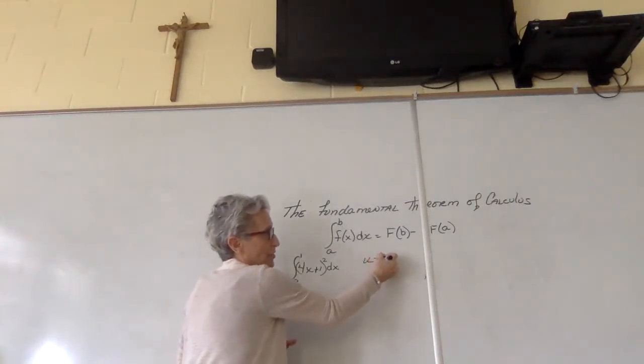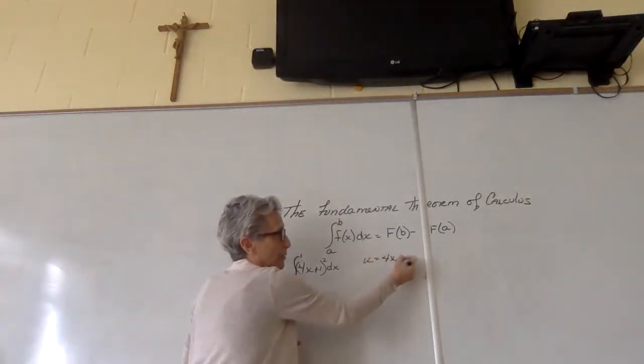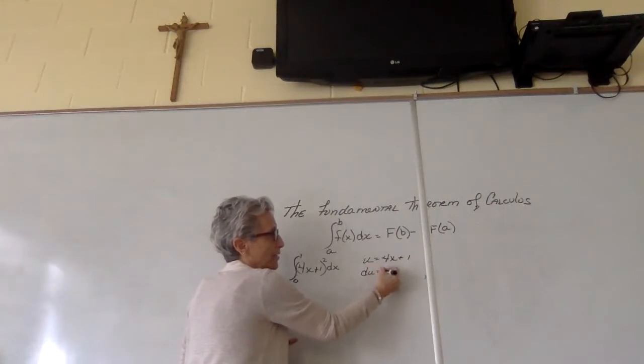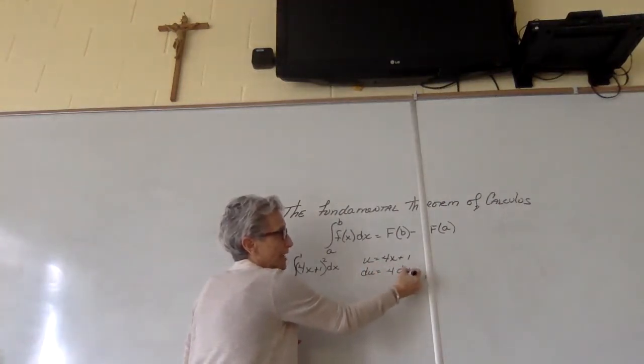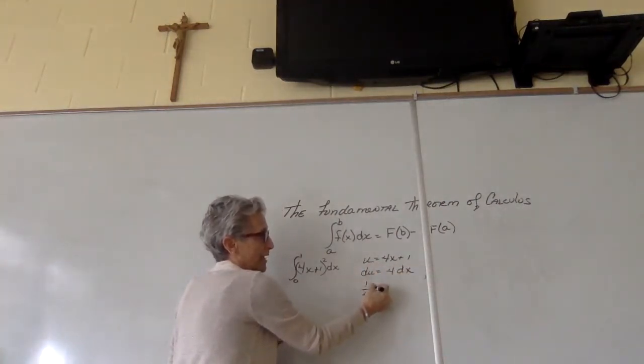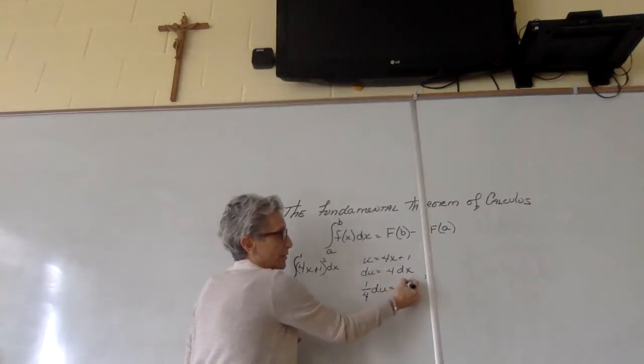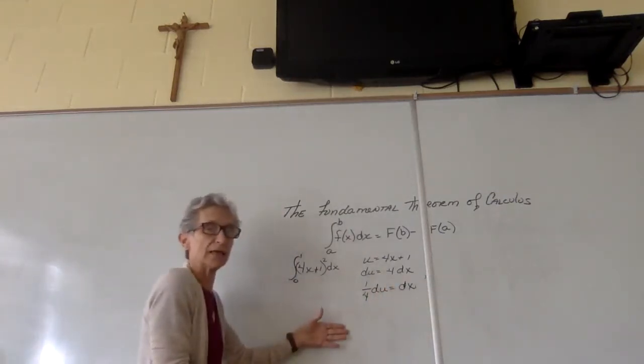That doesn't change. So u equals 4x plus 1, du is going to equal 4 dx, so you're going to take one-fourth du to get the dx that you need.